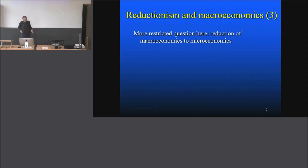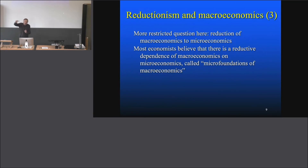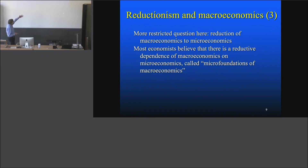He gets more focused on the relationship between macroeconomics and microeconomics. He says that most economists believe there is a reductive dependence of macroeconomics on microeconomics — called microfoundations of macroeconomics. The critical term is 'reductive dependence,' because it's not really clear what that dependence is, and that has to be clarified and spelled out. We'll do that in the course of the class today.